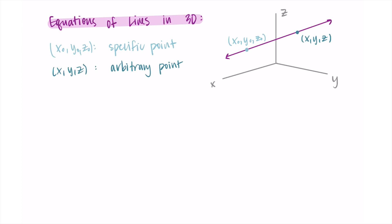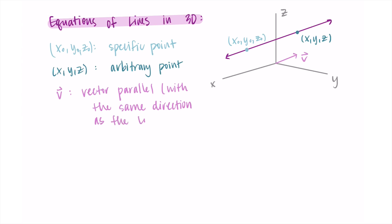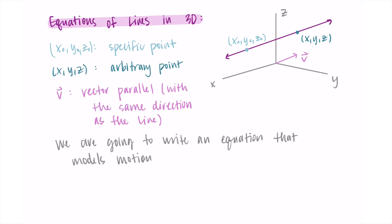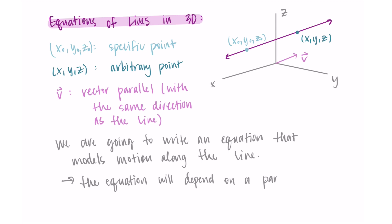The other thing we're going to need is a vector that's parallel to the line — just a vector that has the same direction as the line. Remember, vectors can be anywhere in space; they don't have a set start and end point. I'm going to draw it in standard position starting at the origin to make it easier to visualize. Our plan is to write an equation that models motion along the line, and the equation is going to depend on a parameter t, which I think of as representing time.